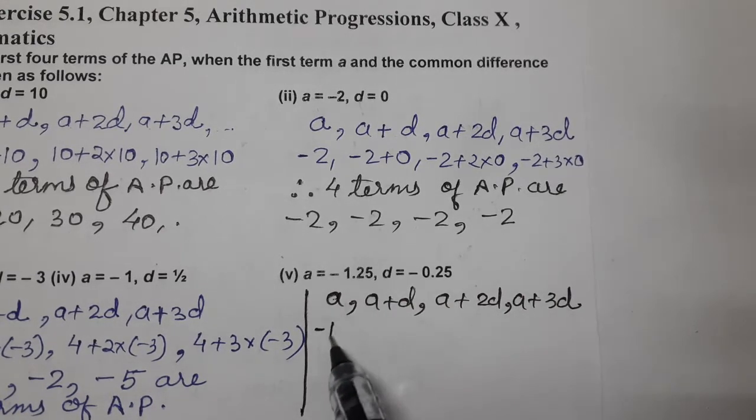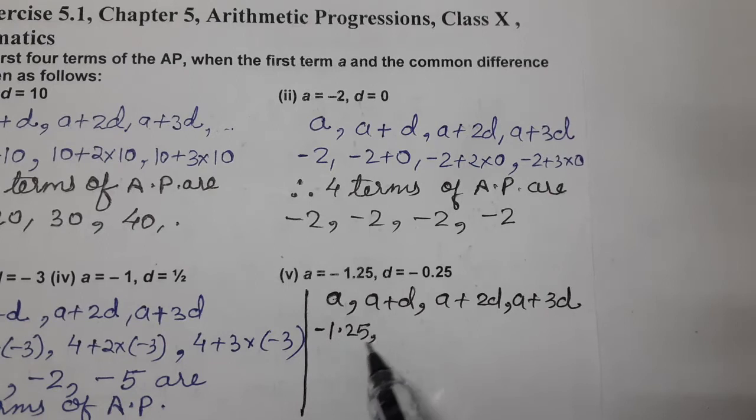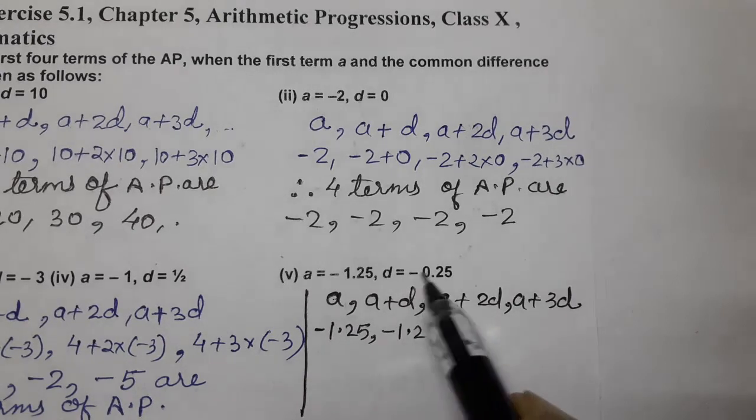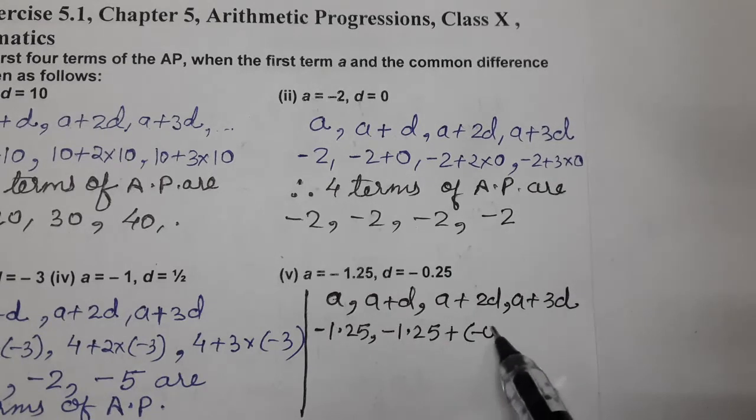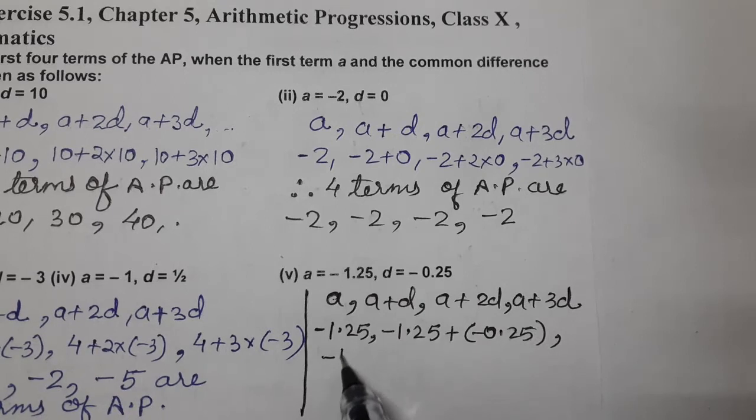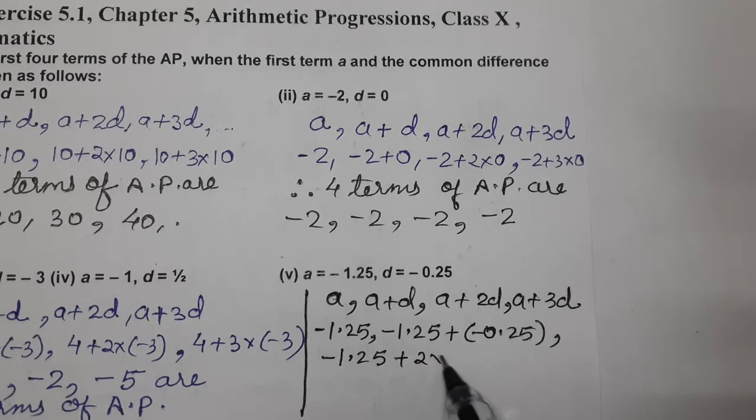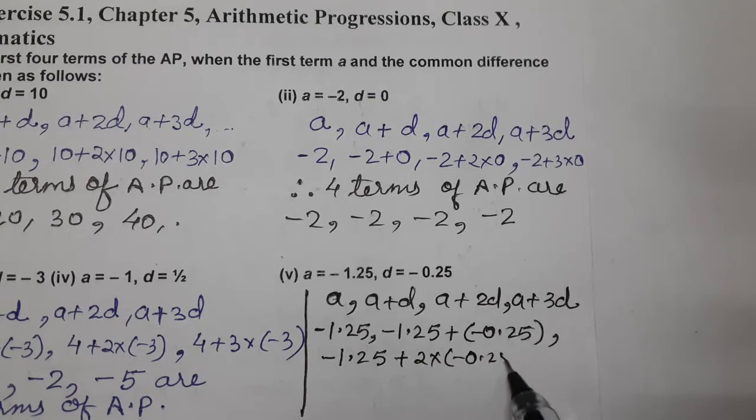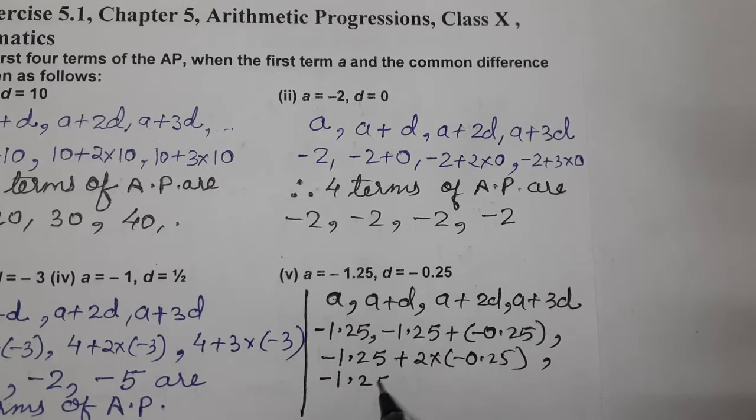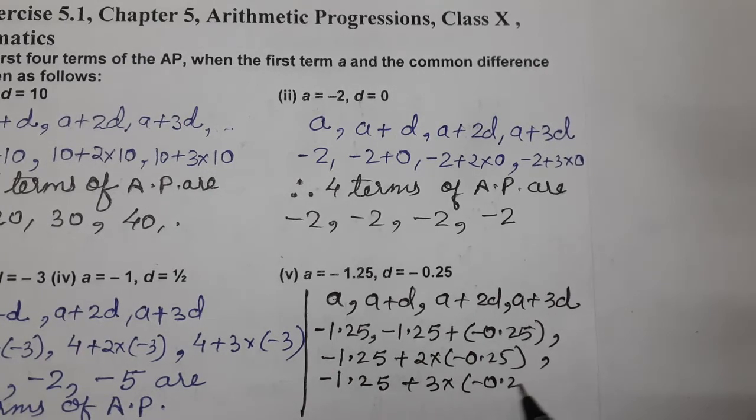A kitna hai? Minus 1.25. Minus 1.25 plus D, D kitna hai? Minus 0.25. This is second term. Third term kya hogi? A plus, means minus 1.25 plus 2 into minus 0.25. And fourth term kya hogi? Minus 1.25 plus 3 into minus 0.25. These are the four terms.